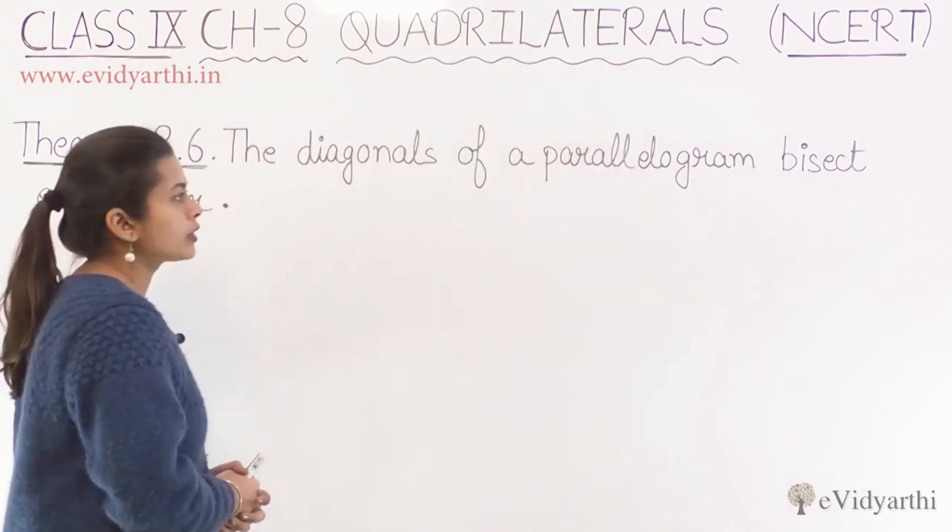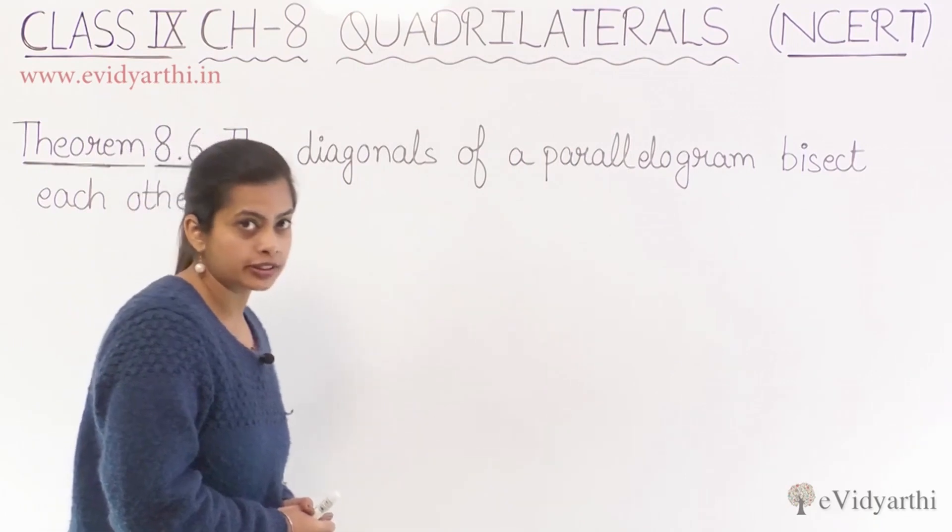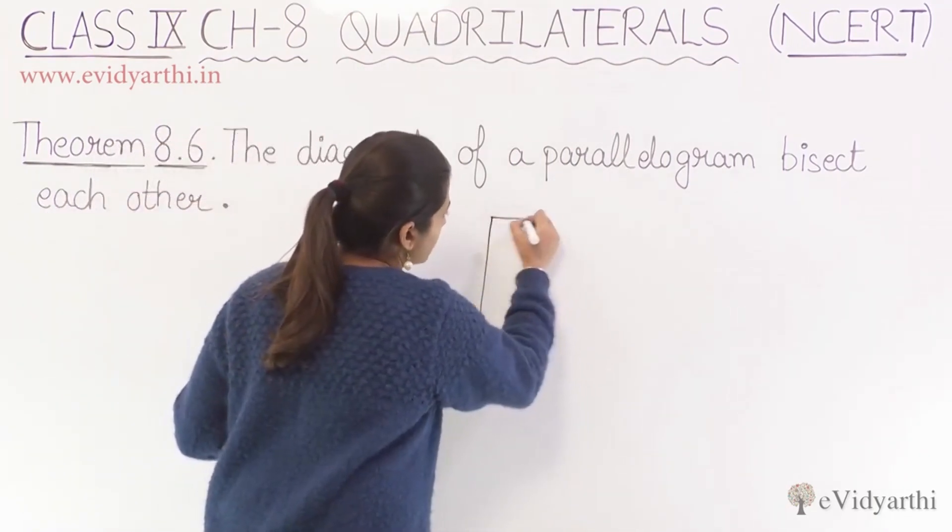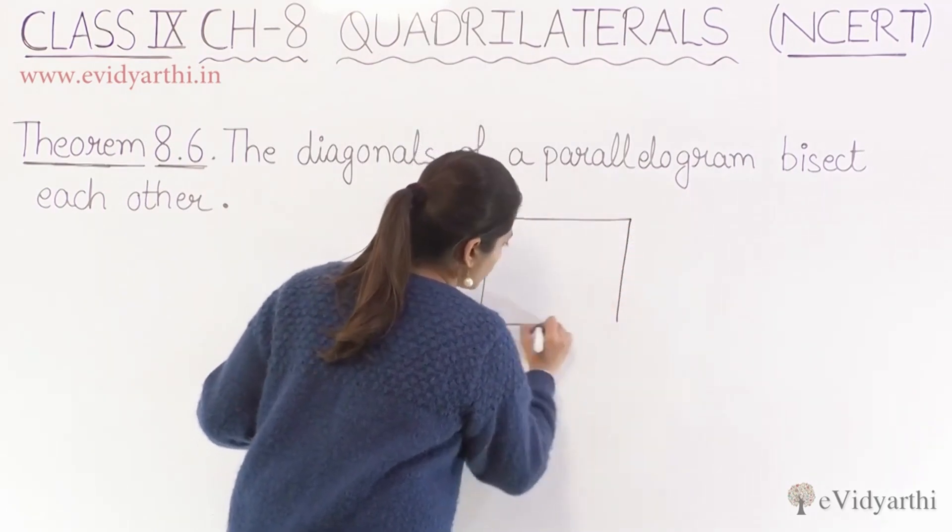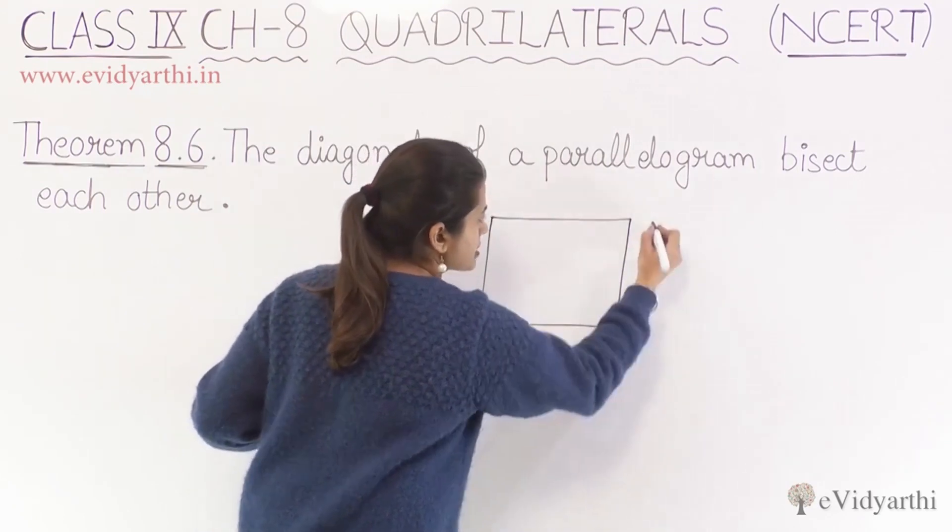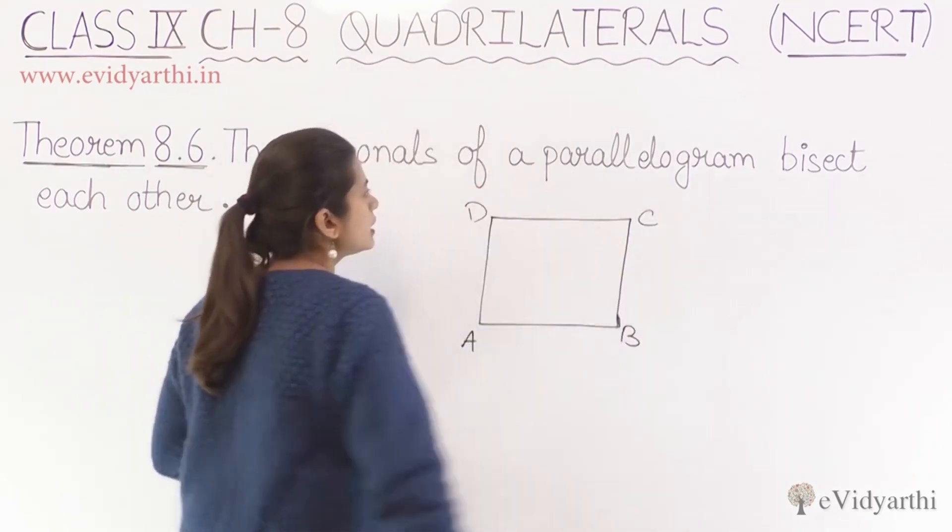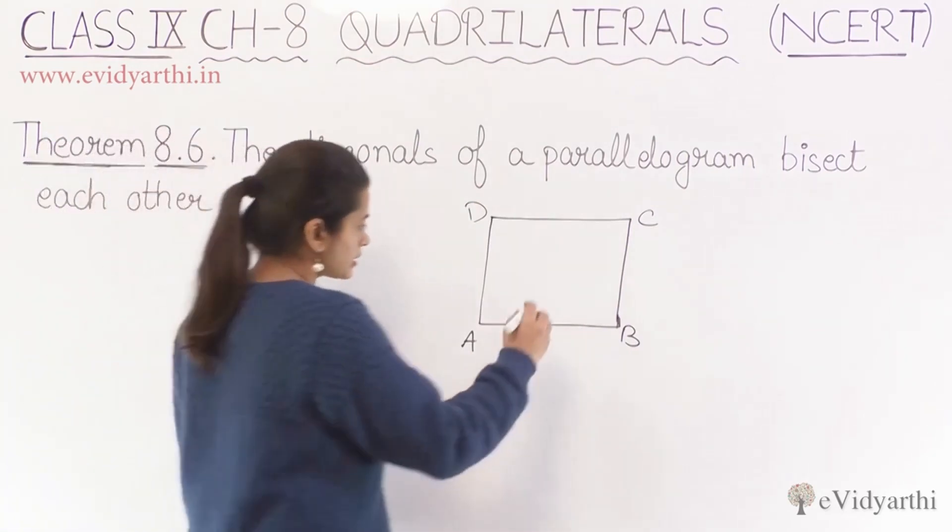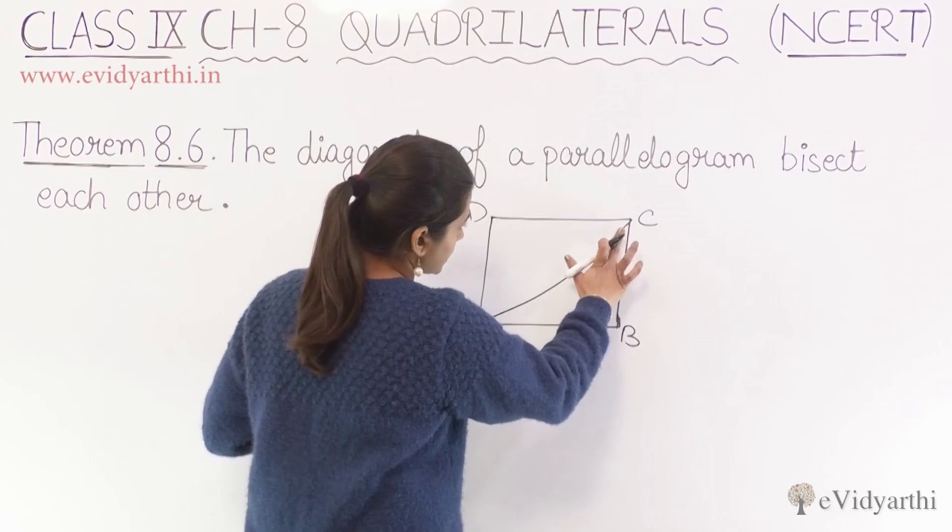The diagonals of a parallelogram bisect each other. So this is also an interesting theorem. Here we have a parallelogram. Let me label it. First we'll label it A, B, C, D. Let me draw its diagonals.